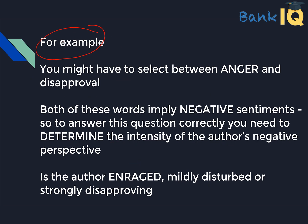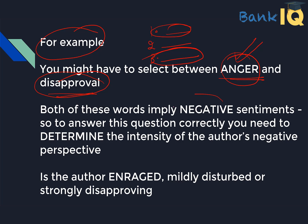For example, you may see anger or disapproval in the tone. Both anger and disapproval can be asked in a question: 'What is the tone of the author?' Option 1: anger. Option 2: something else. Option 3: disapproval. What will you do with anger or disapproval? Because both are negative connotations.